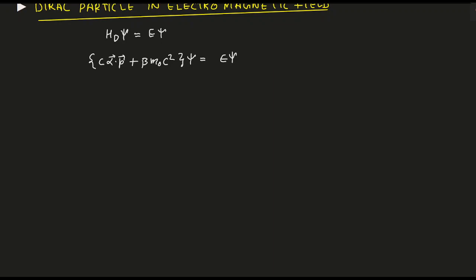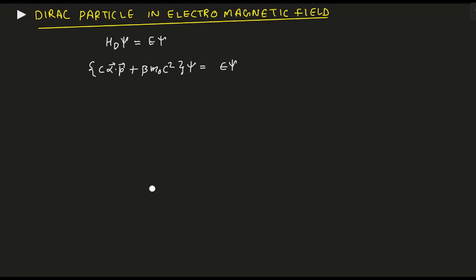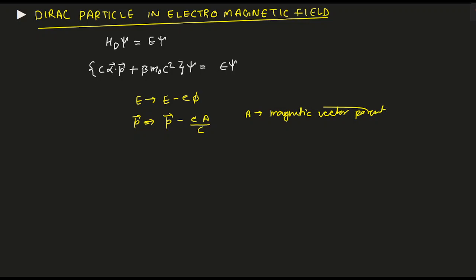So what changes when you put this system in the electromagnetic field? Two things happen, analogous to what we did with the Schrödinger equation. E gets replaced by E minus e phi, and p gets replaced by p minus eA divided by c, where A is the magnetic vector potential.